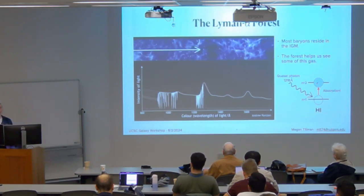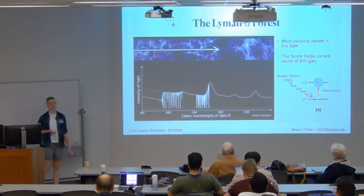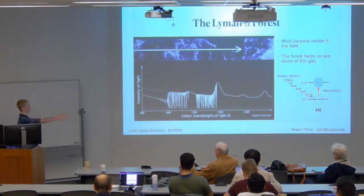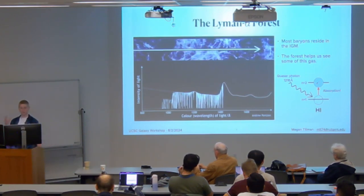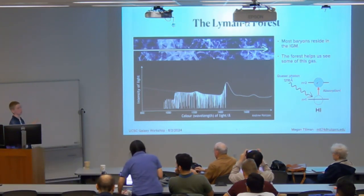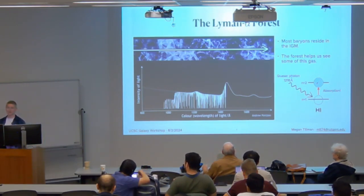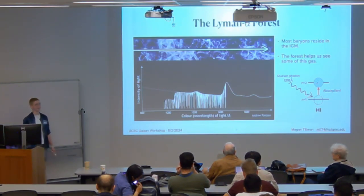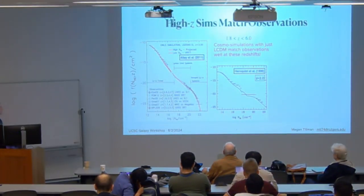Just to briefly go over what the Lyman alpha forest is — many of you might be thinking of Lyman alpha emitters, because that's most often what we hear. The Lyman alpha forest is a series of absorption lines in Lyman alpha at different redshifts, because as quasar light travels through the medium between its host and us, different absorbers absorb some of the quasar spectra and populate different lines. Each of these absorbers is a tree in what we call the Lyman alpha forest, and this helps us see gas that we otherwise would be unable to see.